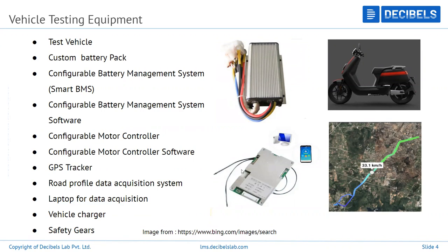The smart BMS — battery management system — attached to your custom battery pack gives you real-time data: battery voltage, cell voltage, balance state. You can configure maximum and minimum charge/discharge voltage, temperature settings, charging and discharging settings, and various other parameters. Everything can be monitored, configured, and data-logged. Why log data? To know how much energy is consumed and how much current has been discharged across different road profiles, giving you an overall idea of what your battery pack should be and what the real-time range of the vehicle will be.